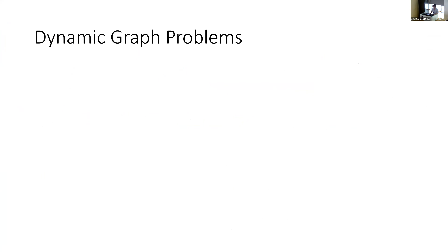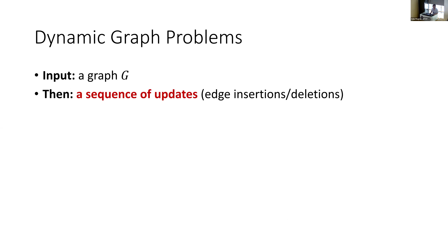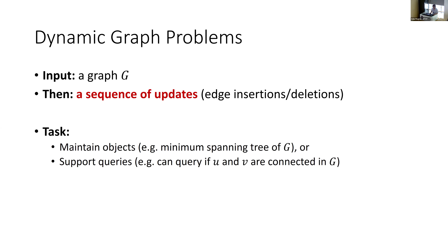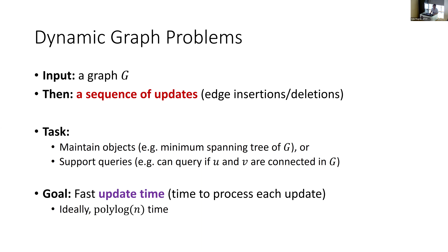Dynamic graph algorithms in general is a problem where you start with a graph, but now the graph is dynamic. You have some sequence of updates, which is basically just insertion or deletion. The task can be various things — you want to maintain some object like a minimum spanning tree, or support some useful query like a connectivity query. The goal usually is to get fast update time, ideally polylogarithmic time.